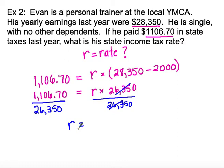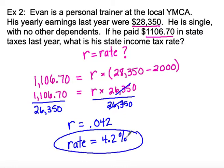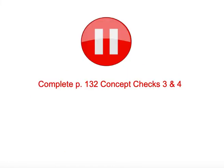When I find the answer it will be in decimal form. Dividing gives 0.042, and multiplying by 100 gives a state tax rate of 4.2%. Now pause the video and try concept checks three and four. In those problems you're not always missing the rate — one is missing the number of exemptions and one is missing the annual gross pay. Pause and try them, then check your work with my examples on the next slide.